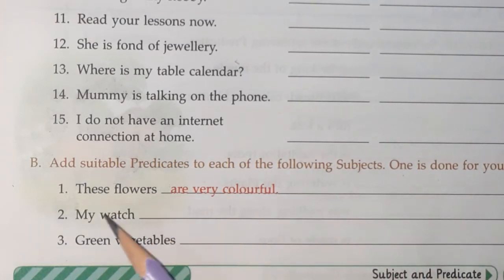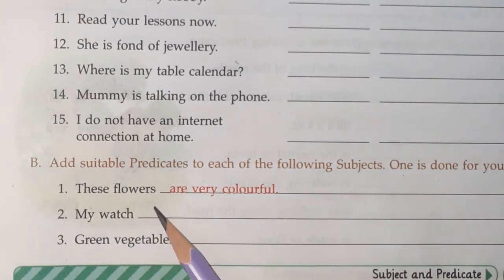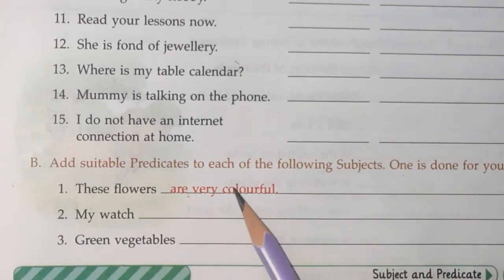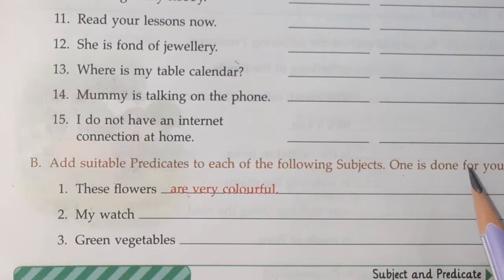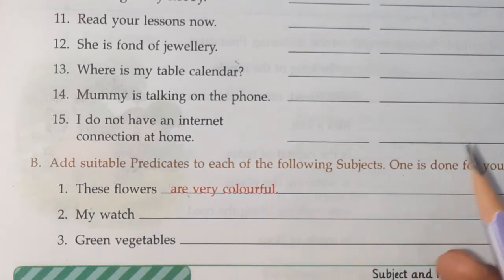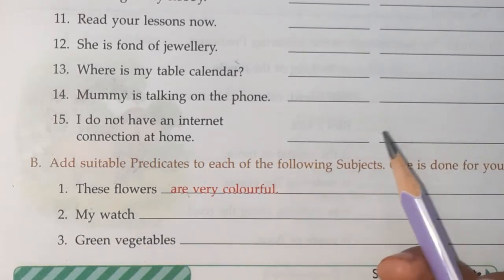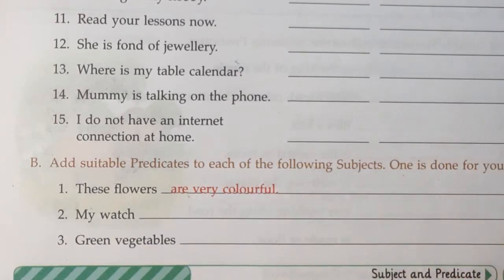So for example, in the first one: these flowers are very colorful. You can see — these flowers are beautiful. You can add any predicate you want.